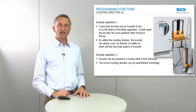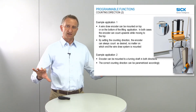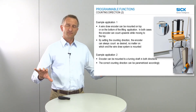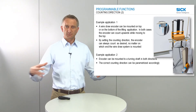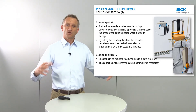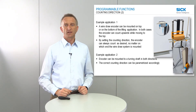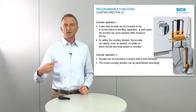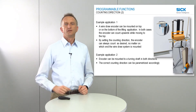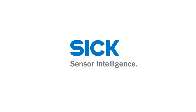Similarly, if you have an application with a turning shaft, it does not matter if you assemble the encoder from the right side or from the left side. You can always adjust the counting direction so that you always have your desired and preferred counting direction.